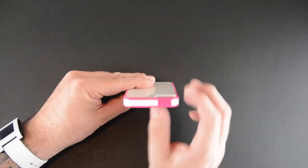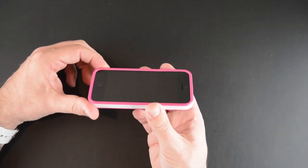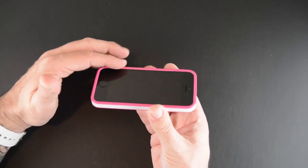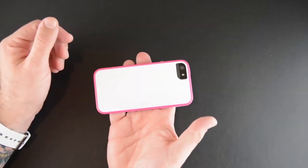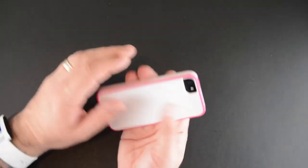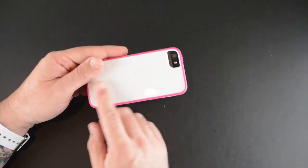This case offers tons of lay on the table protection. The TPU lip comes up above the glass so there's no issue putting it down screen side first. The back has an extra large cutout for the secondary mic, camera, and LED flash.